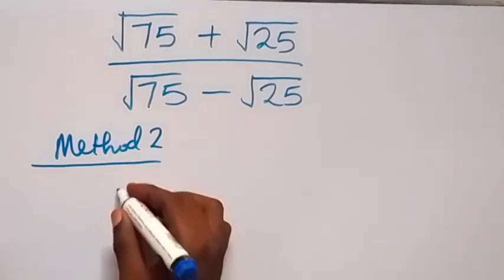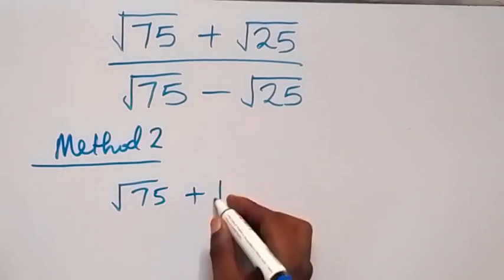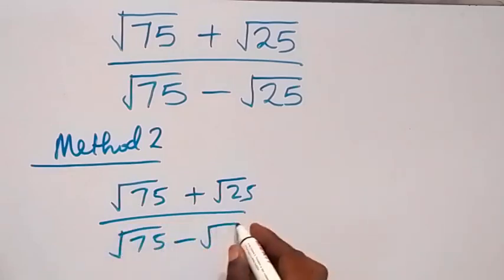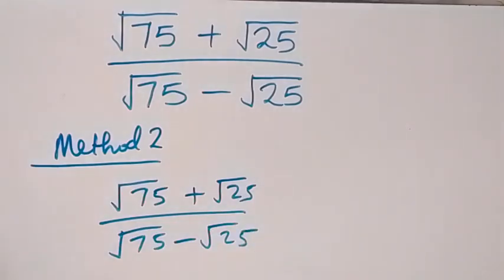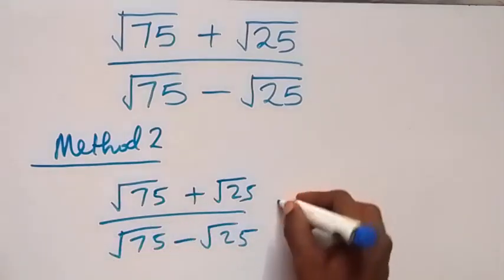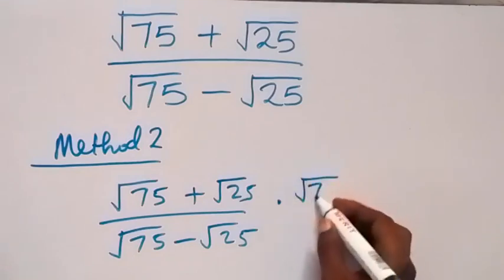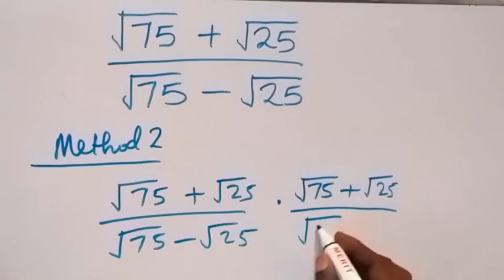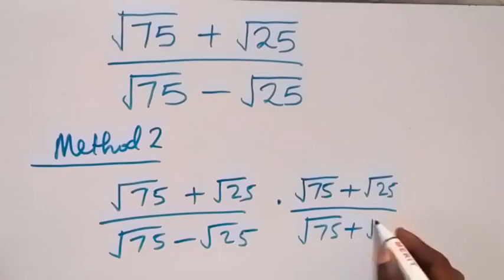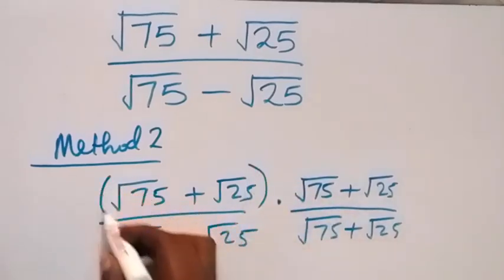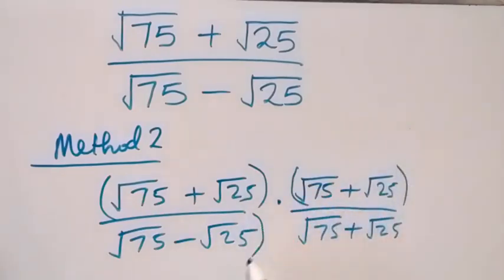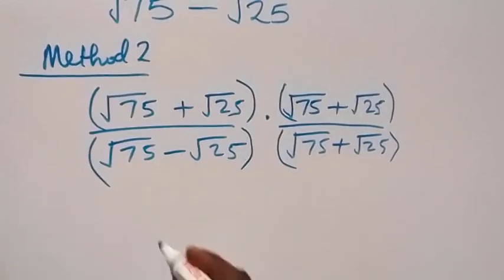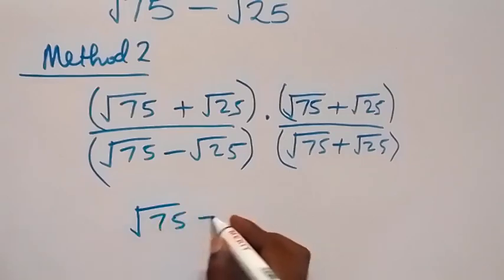For the second method, we have root 75 plus root 25 over root 75 minus root 25. From here, we can rationalize straight and multiply with the conjugate of the denominator. The conjugate here is root 75 plus root 25 over root 75 plus root 25. We put each part in brackets and multiply straight.